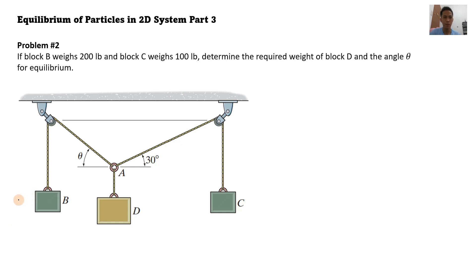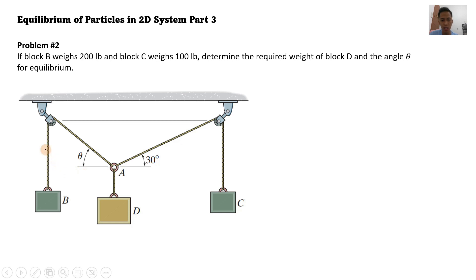Let's proceed to problem number 2. If block B weighs 200 pounds and block C weighs 100 pounds, determine the required weight of block D and the angle theta for equilibrium. Notice here that our system has two pulleys and we have 2 weights that are suspended in it — we have block B and block C.